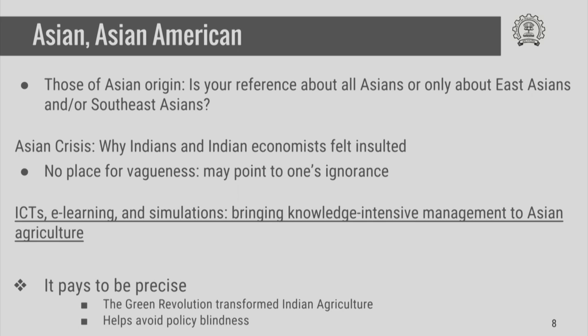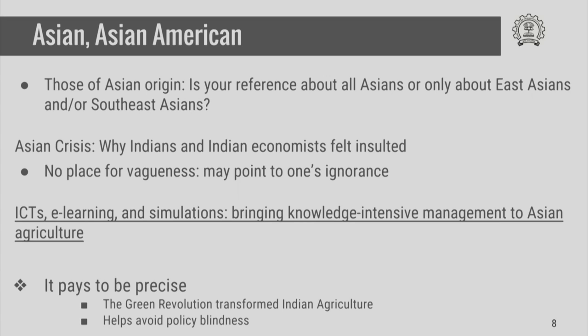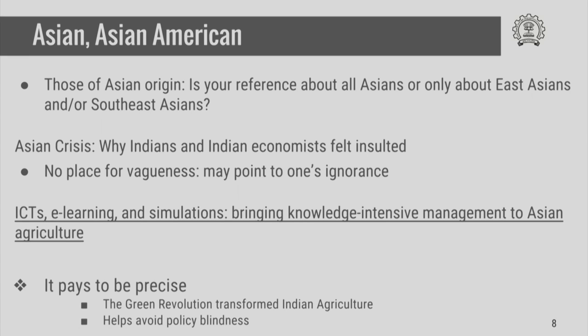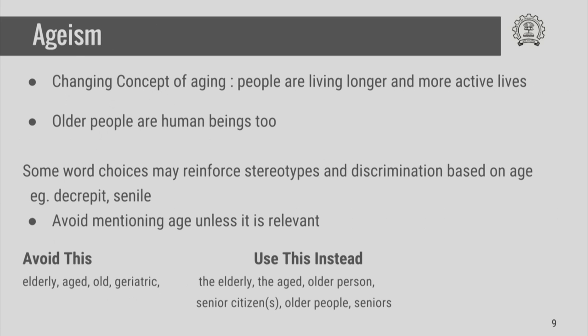It also helps to avoid policy blindness. For example, the Green Revolution was a technological intervention to enhance agricultural productivity only in some parts of India that offered a favorable environment. By using terms such as 'Indian agriculture,' one is blind to the diversity of situations in Indian agriculture and may be prevented from looking for alternative, diverse technological solutions to the problem. So, overgeneralization in referring to regions, people, continents and nations is to be avoided.